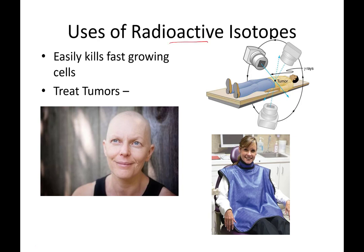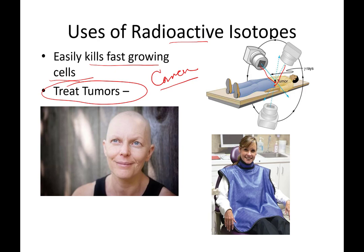Radioactive isotopes have many positive uses. They kill fast-growing cells, which makes them great at treating tumors — that's why radiation is commonly used as a cancer treatment. Gamma radiation specifically can be aimed precisely at a tumor like a laser knife, rather than at the whole patient. People undergoing radiation cancer treatments often lose their hair because hair is one of the fastest-growing sets of cells in the body. A lead blanket is used to protect reproductive cells, which are also fast-growing.